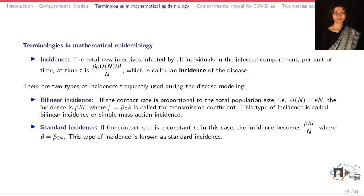The next terminology is incidence. The total new infected individuals in the infected compartment per unit of time is known as incidence of the disease, and mathematically we write it as beta-naught times u(n) times SI/N. There are two types of incidences frequently used during disease modeling. One is bilinear incidence: if the contact rate is proportional to total population size, then the incidence is beta SI, and this type is called bilinear incidence or simple mass action incidence. The other type is standard incidence: if the contact rate is a constant c, the incidence becomes beta SI/N where beta equals beta-naught times c — this type is known as standard incidence.